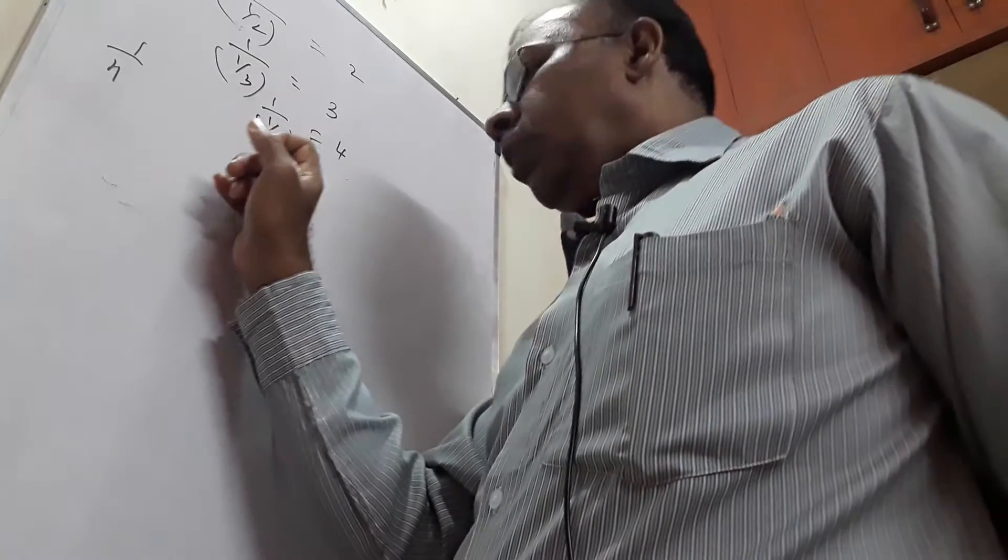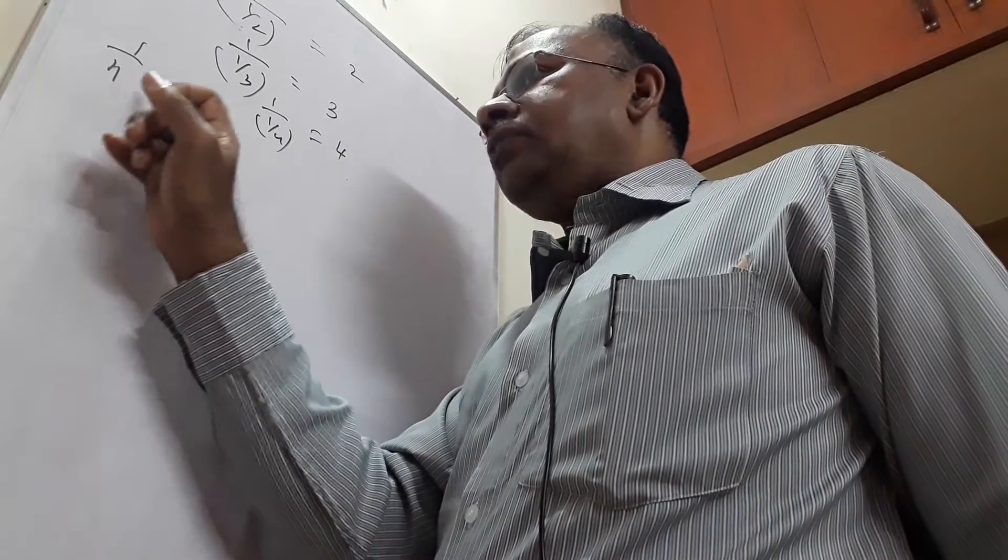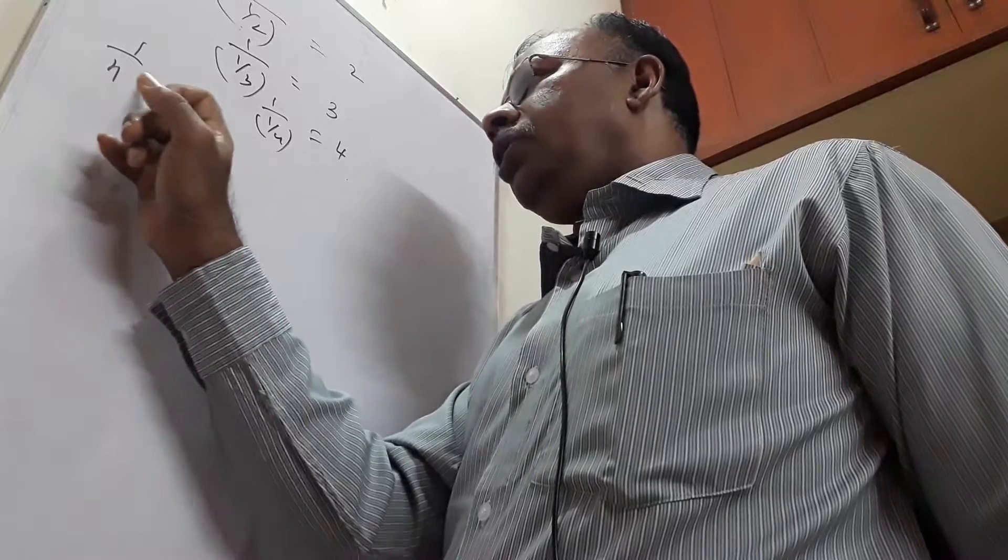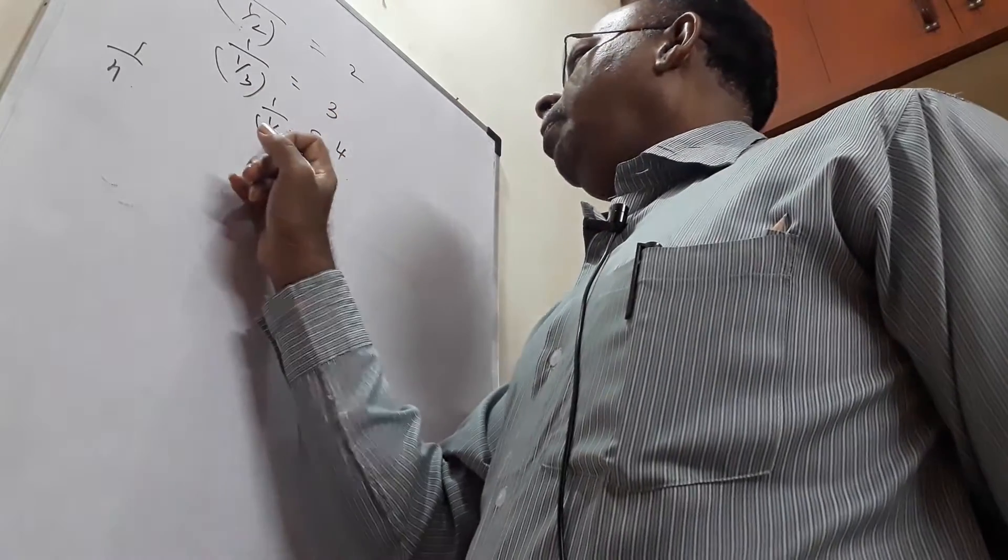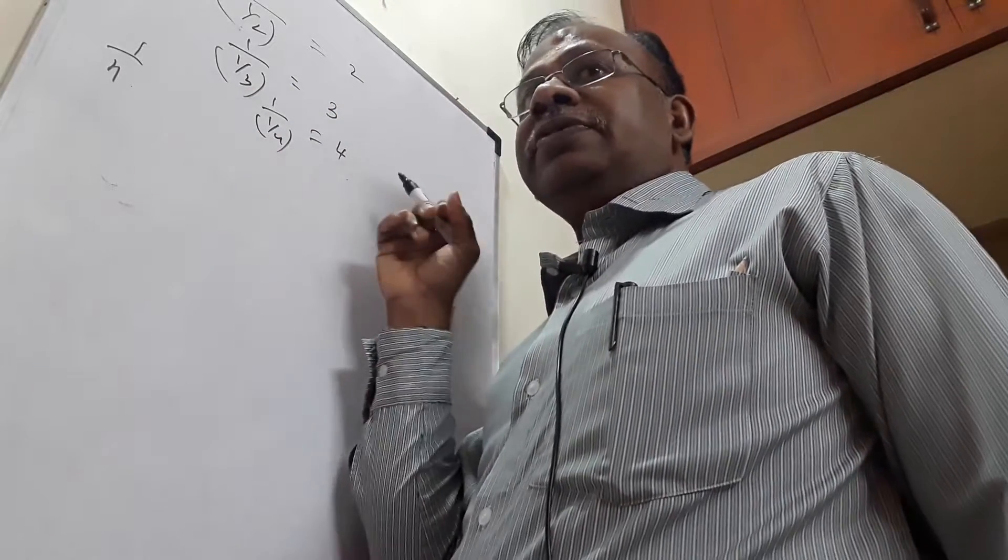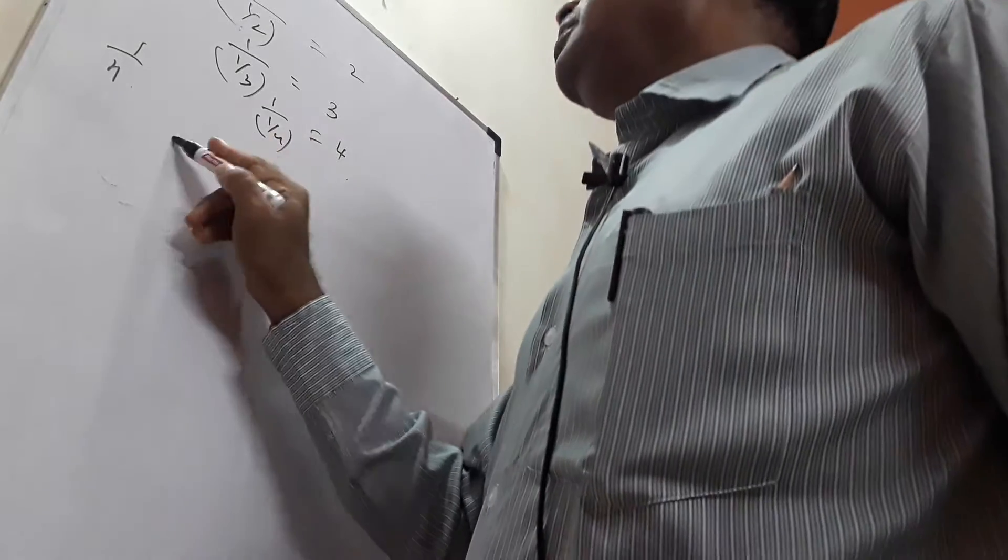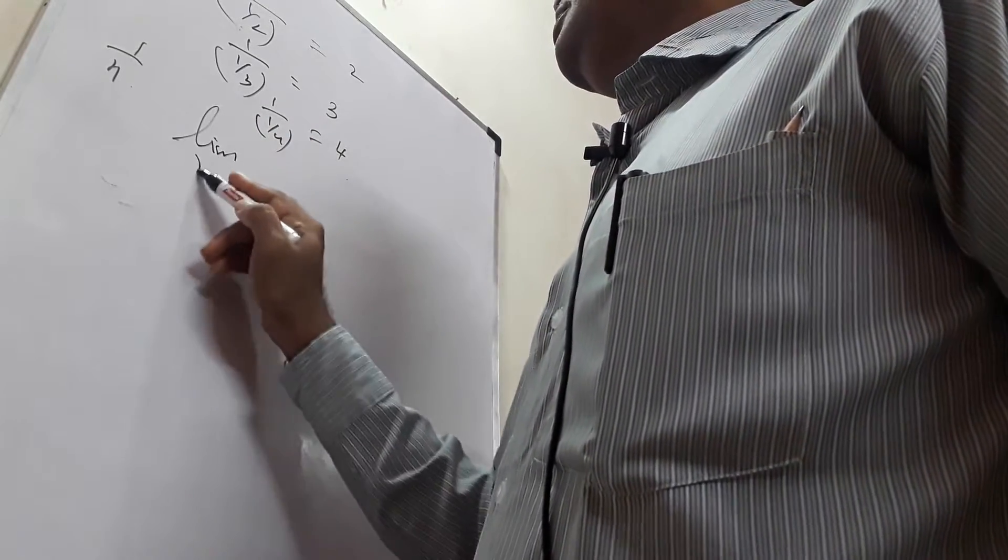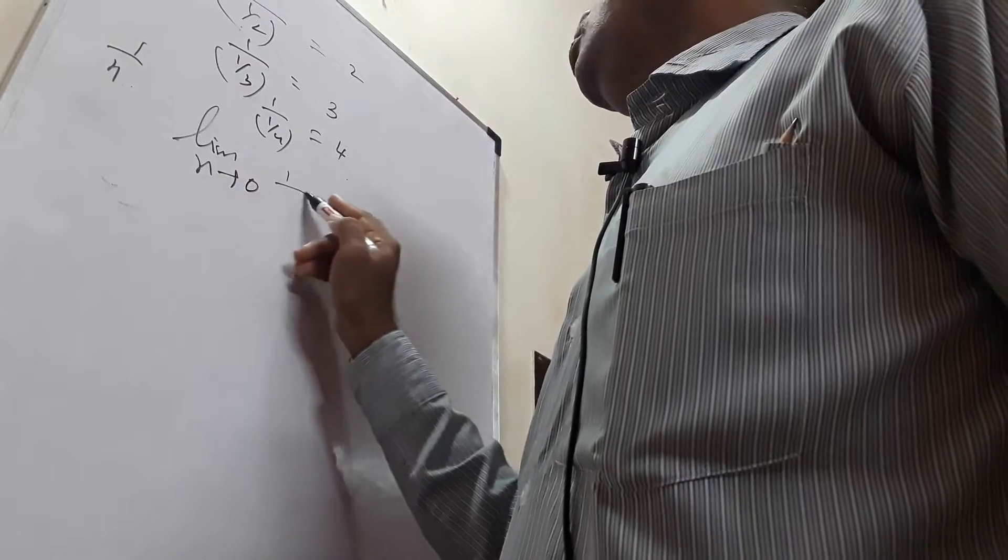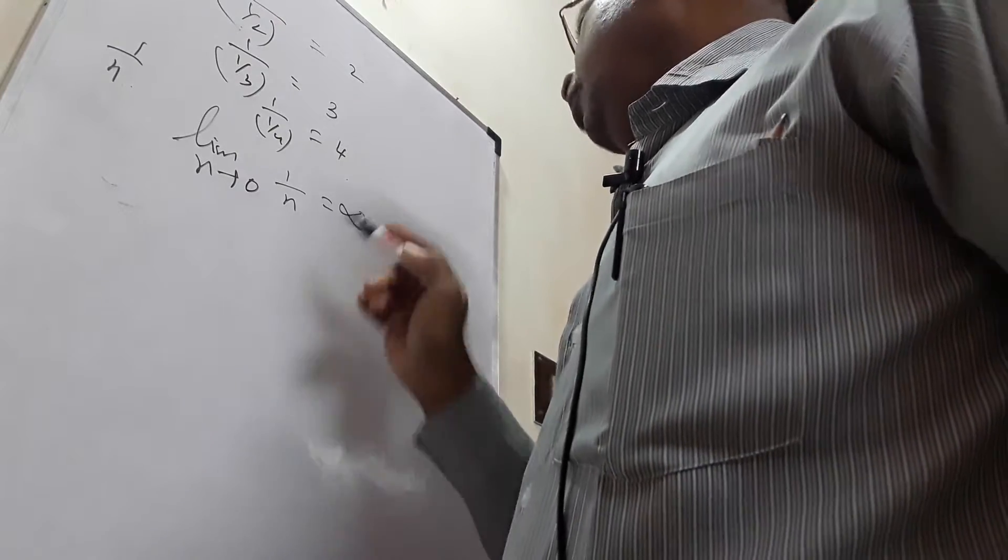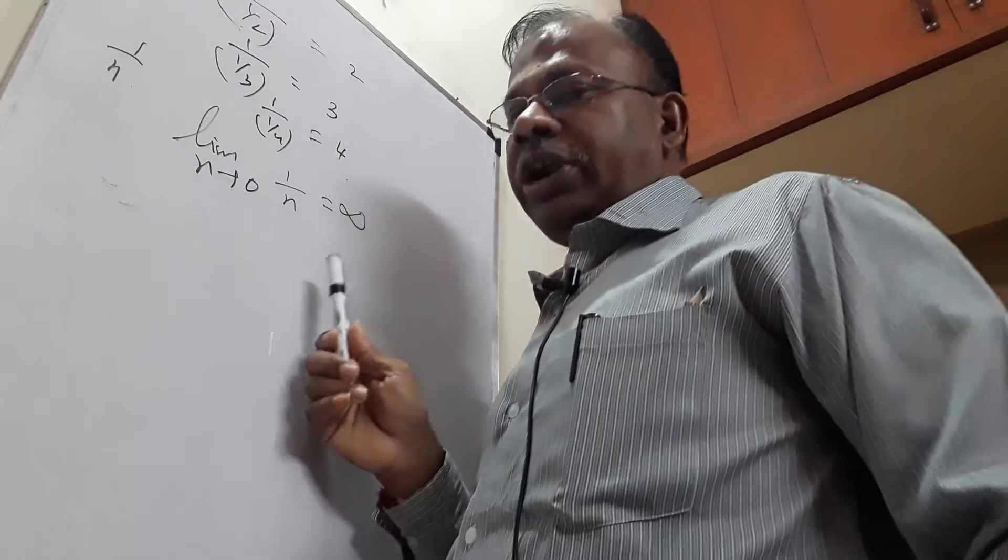Therefore when I think about the denominator n as close as possible to 0, my 1 by n will be a quantity which is nearer to infinity. This is mathematically written as limit n tends to 0 of 1 by n is equal to infinity, or we can even say it is not defined either way.